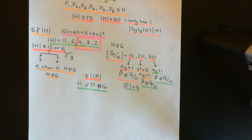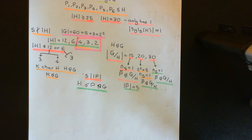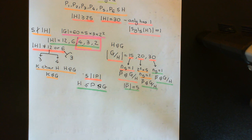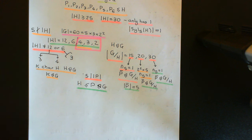We have now proven that the normal subgroup H cannot exist — it cannot have any of the possible orders. Hence if a group of order 60 has more than one Sylow-5 subgroup, any normal subgroup must be trivial or improper, so the group is simple. Therefore, the alternating group A5 on the set of five elements is a simple group, completing the proof the entire video was intended to establish.